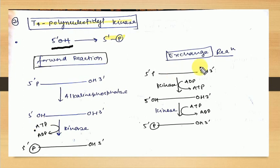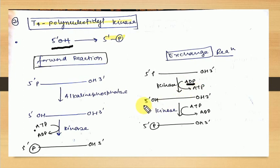In the exchange reaction, kinase can also exchange phosphate groups. Kinase takes the phosphate from the 5 prime end and transfers it to ADP, converting ADP into ATP. Then when a 5 prime OH group is present, the kinase takes phosphate from that newly formed ATP (or another ATP molecule) and transfers it back to the 5 prime end. This is an exchange of the phosphate group — kinase can perform both types of reactions.